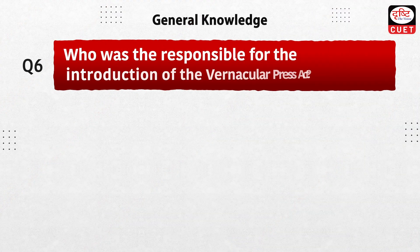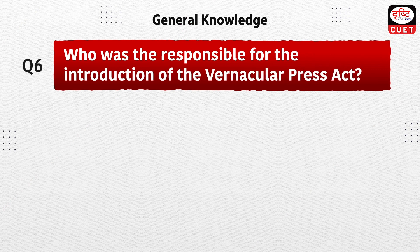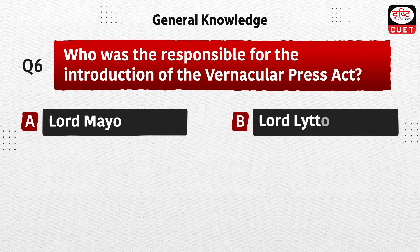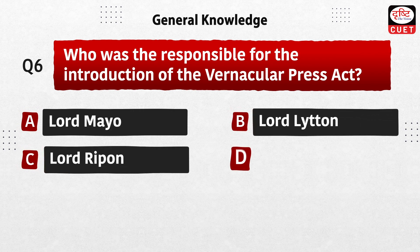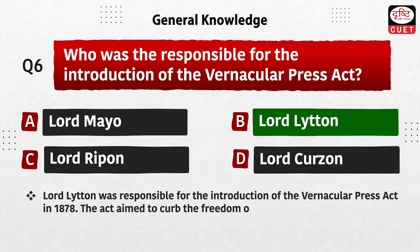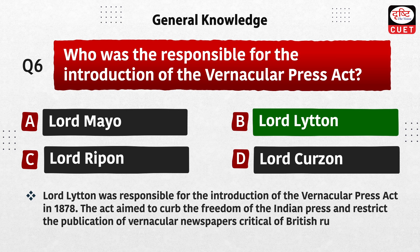Next question: who was responsible for the introduction of the Vernacular Press Act — Lord Mayo, Lord Lytton, Lord Ripon, or Lord Curzon? The correct answer is option B, Lord Lytton. Lord Lytton was responsible for the introduction of the Vernacular Press Act in 1878. The act aimed to curb the freedom of the Indian press and restrict the publication of vernacular newspapers critical of British rule.